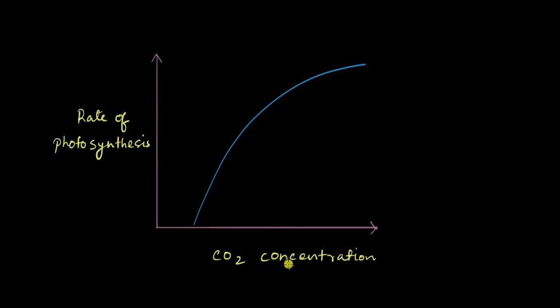A similar thing happens here. The rate initially increases linearly and then finally it levels off because there are at that point other limiting factors like light for example or temperature which are not good enough.